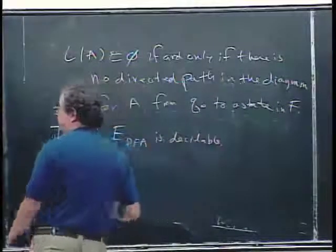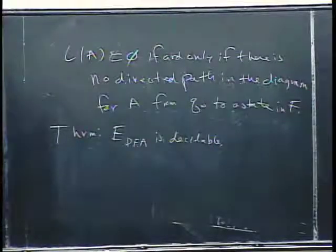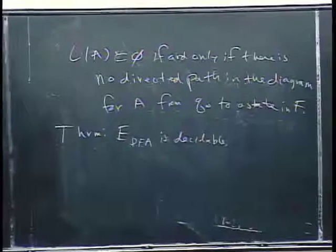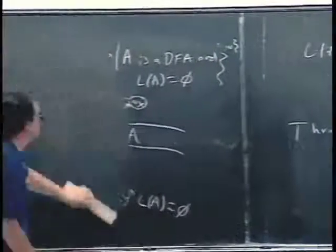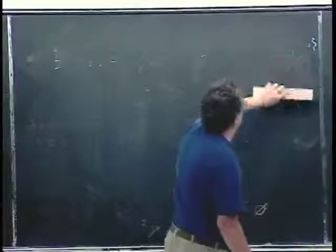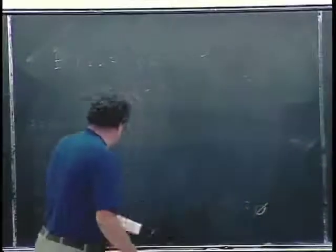The Turing machine working on symbols — not on pictures — can in effect mark Q0 as reached, look at the transition rules to see what states can be reached from Q0, and continue marking reachable states, checking at each step whether a final state has been reached. Therefore E-DFA is decidable: there is a Turing machine that can take the description of any DFA and decide whether that DFA ever accepts anything.